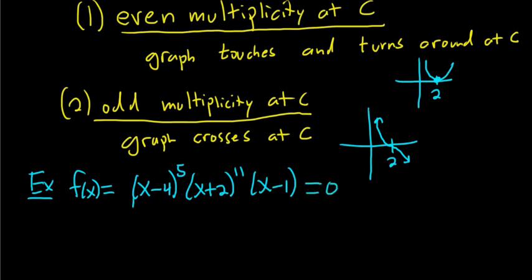So all you do is you set this whole thing equal to zero. And then you see from here you can get all of the answers. So what makes this zero? Well, 4. So x equals 4. What makes this zero? So negative 2. So x equals negative 2. What makes this zero? So x equals 1. So these are your zeros. So 4 is a zero, negative 2 is a zero, 1 is a zero. Really simple.